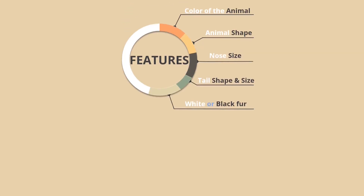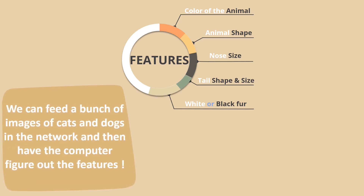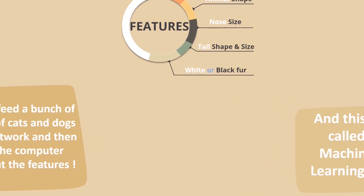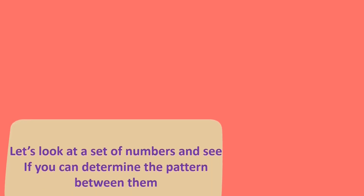So instead of us as developers figuring out the features — what's the color and shape of the animal, how the noses look, the shape and size of the tail, whether the fur is white or black — we can feed a bunch of images of cats and dogs into the network and have the computer figure out the features. This is called machine learning.